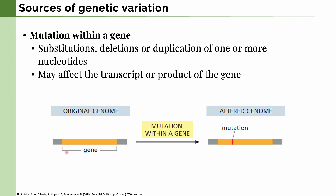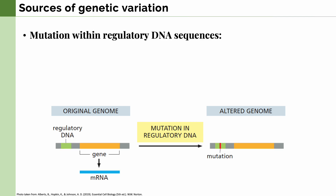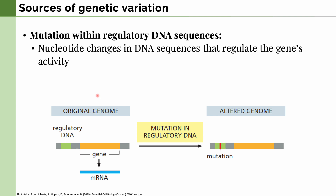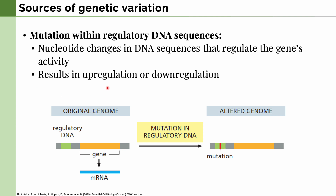In this figure, we can see the gene and the altered gene with the mutation. We can also find mutations within regulatory DNA sequences. These are not part of the gene per se, but are used to tell the cell whether or not to express this gene. Nucleotide changes in the DNA sequences that regulate the gene's activity can result in upregulation or downregulation of a specific gene.